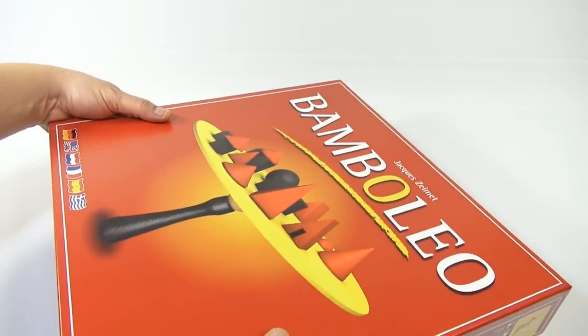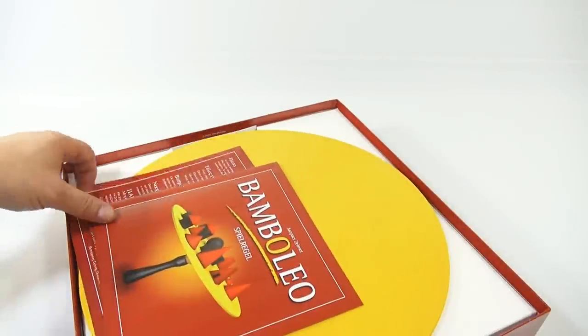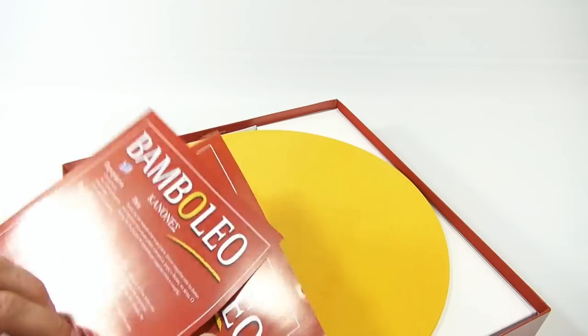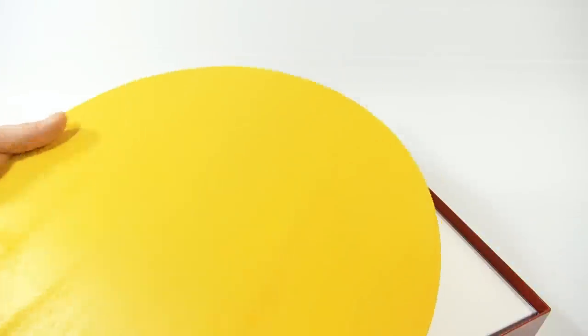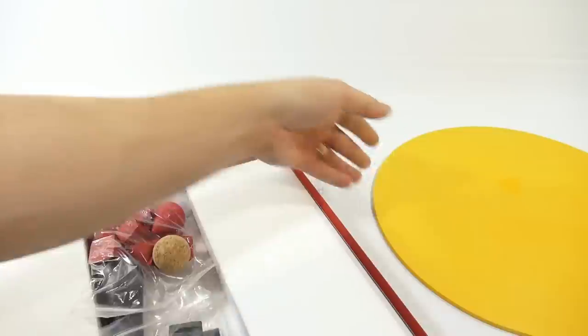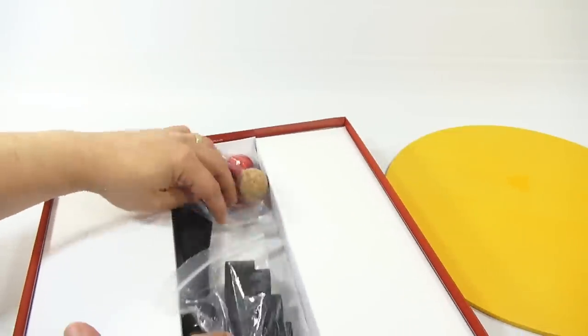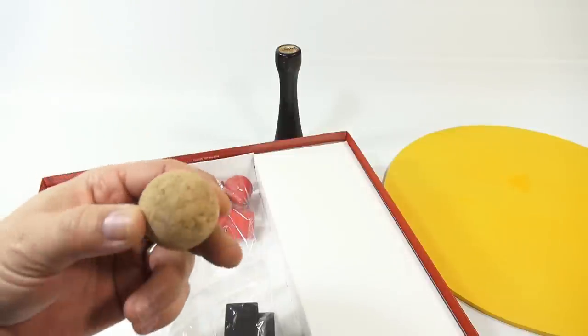All right, so you are getting the instructions and the sheet, not sure what this is. Here is the disc and it's got a rough surface on it, it's not smooth. And here's the pieces.